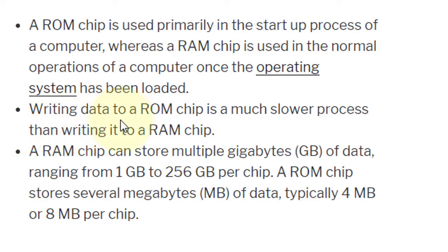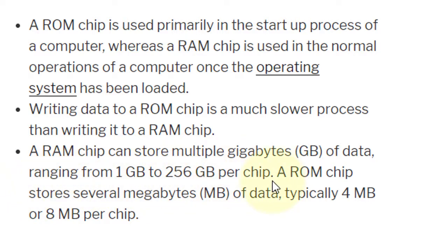Writing data to a ROM chip is a much slower process than writing it to a RAM chip. A RAM chip can store multiple GB of data, ranging from 1 GB to 56 GB per chip. A ROM chip stores several MB of data, typically 4 MB or 8 MB per chip.